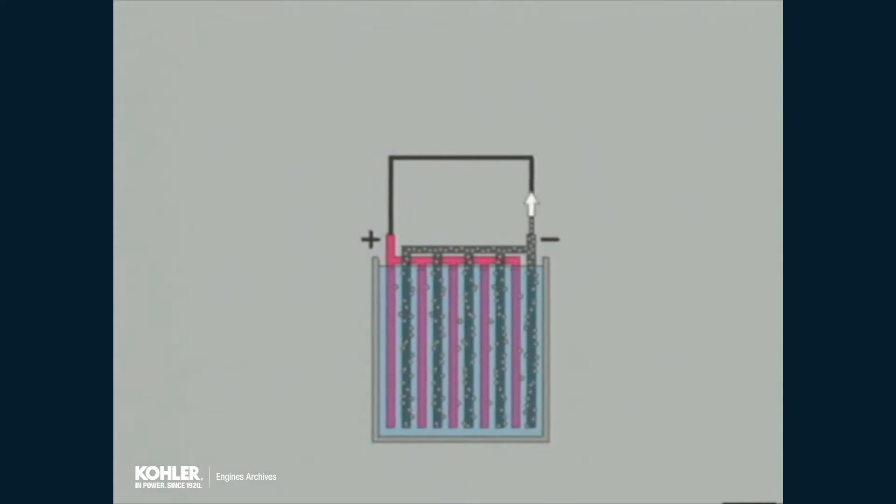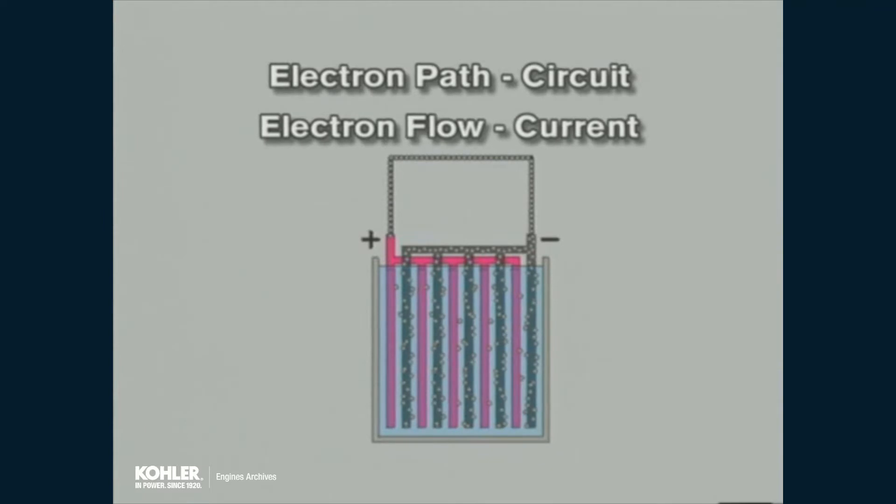If a path of conductor material is established between the terminals, the excess electrons at the negative terminal will force a flow of electrons through the conductor to the positive terminal. Such a conductor path is called a circuit, and the flow of electrons through the circuit is referred to as current.